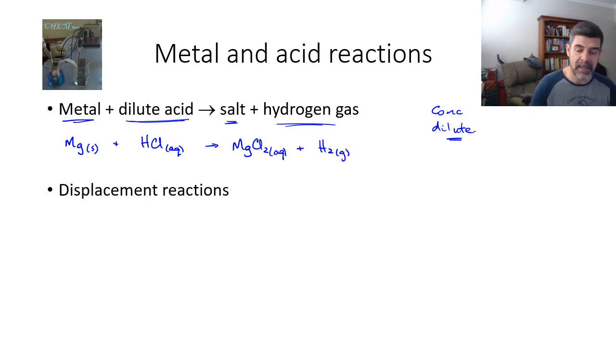As always, we make sure that we balance our equation. And what we can see then is the metal has reacted with the acid in order to produce a salt, in this case, magnesium chloride and hydrogen gas.